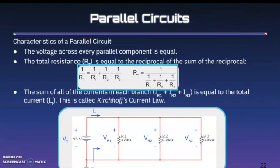Now let's take a look at parallel circuits. The voltage across every parallel component is equal. The total resistance is equal to the reciprocal of the sum of the reciprocals, which is a little different than in a series circuit. The sum of all of the currents in each branch — IR1, IR2, IR3 — is equal to the total current. This is called Kirchhoff's current law.